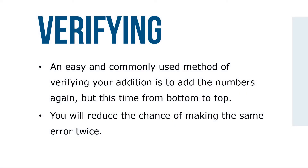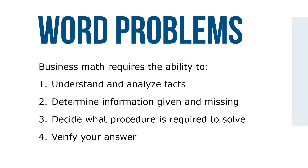When adding the digits in each column, we add from top to bottom. An easy and commonly used method of verifying your addition is to add the numbers again, but this time from bottom to top. By adding the digits in reverse order, you'll reduce the chance of making the same mistake twice. Step 4: Add the numbers again.